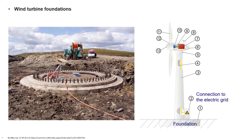Wind turbines by their nature are very tall and slender structures. This can cause a number of issues when the structural design of the foundations are taken into consideration. The foundations of a conventional engineering structure for a wind turbine are designed mainly to transfer the vertical load — the dead weight — to the ground. However, in the case of wind turbines, the force of the wind's interaction with the rotor at the top of the tower creates a strong tendency to tip the wind turbine over. This loading regime causes large moment loads to be applied to the foundations.